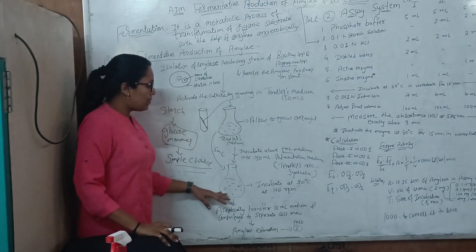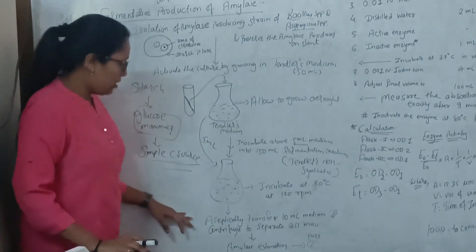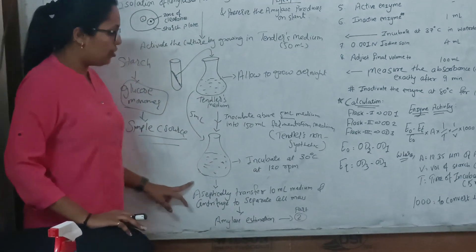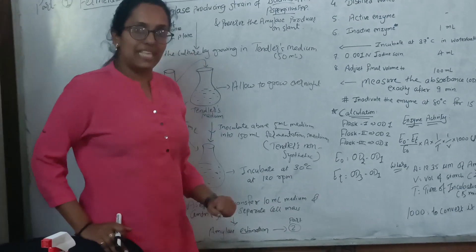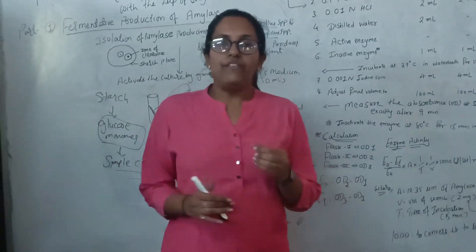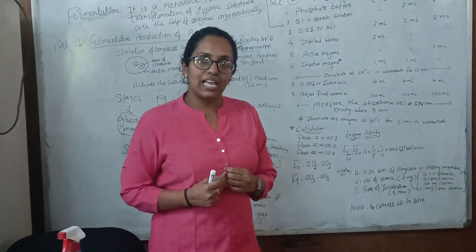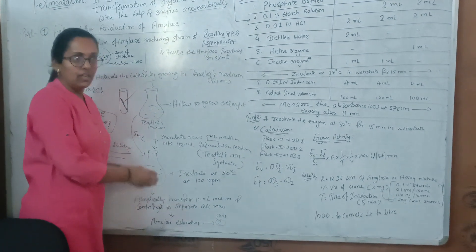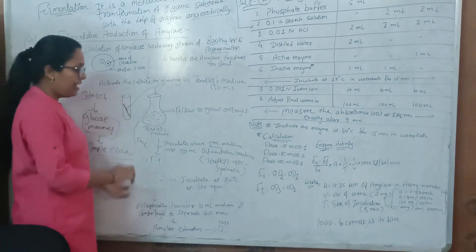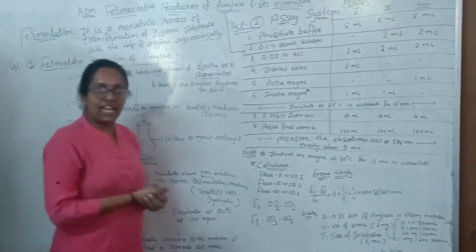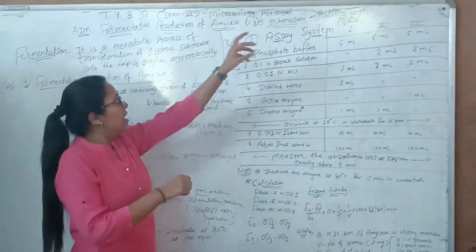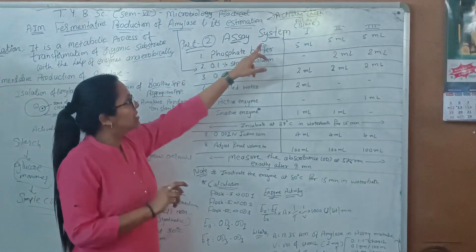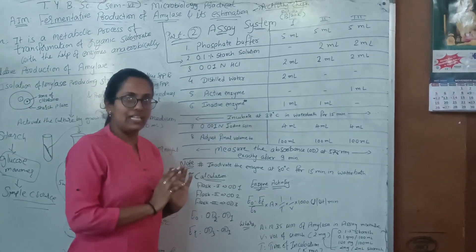After the incubation period of fermentation, we need to aseptically transfer 10 ml of fermentation medium and centrifuge it to separate the cells. In the supernatant, we have the amylase enzyme. So after 3 to 4 days of fermentation for alpha amylase production, we need to check amylase activity with the help of an assay system. Part 2 of the practical is the assay system — that is, the estimation of amylase enzyme.